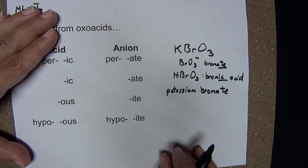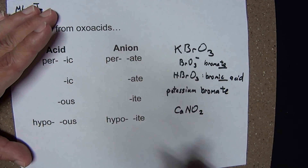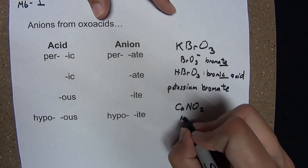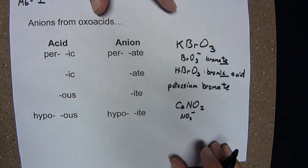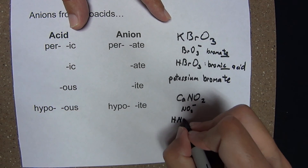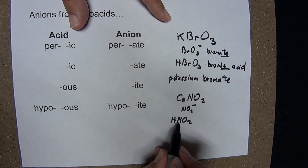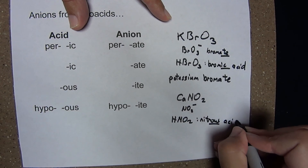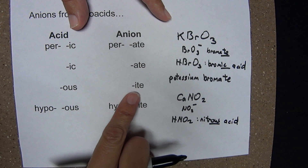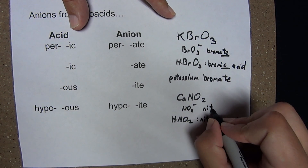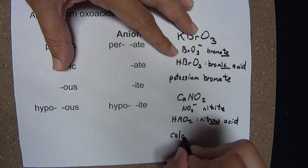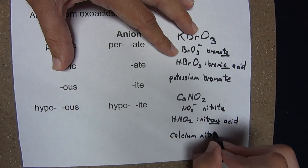Let's do one more. Ca(NO2)2: this is an ionic compound — calcium. The anion is NO2⁻. The parent acid of that daughter anion would be HNO2. The oxidation state of that nitrogen is plus 3, which is 2 less than the ic, making that the -ous acid — this was nitrous acid. The -ous acids produce -ite anions, so that anion is nitrite. The name of this compound is calcium nitrite.